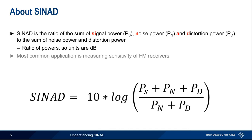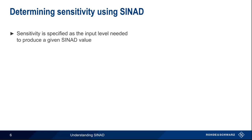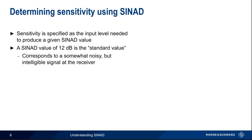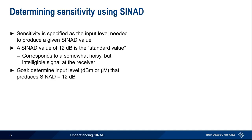The most common application for SYNAD in the radio frequency world is measuring the sensitivity of FM receivers, but SYNAD can also be used for measuring AM or single sideband sensitivity as well. Sensitivity is specified as the input level that's needed to produce a given SYNAD value. The standard SYNAD value used in almost all analog receiver testing is 12 dB. The reason for this particular value is that a SYNAD of 12 dB corresponds to a somewhat noisy, but still intelligible, audio output from the receiver.